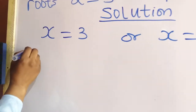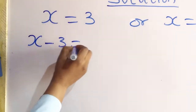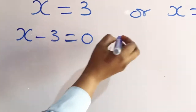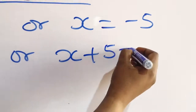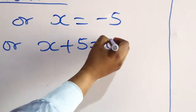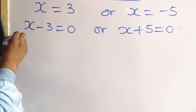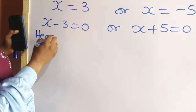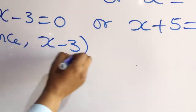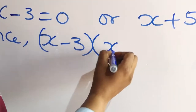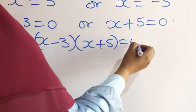We can say x minus 3 is equal to 0 or x plus 5 is equal to 0. So x minus 3 multiplied by x plus 5 is equal to 0.